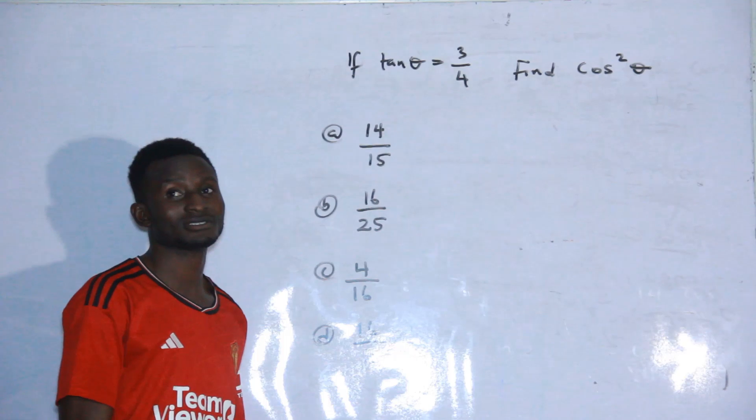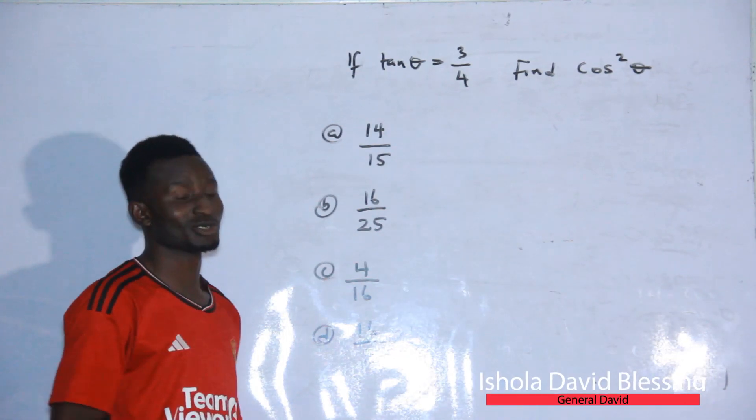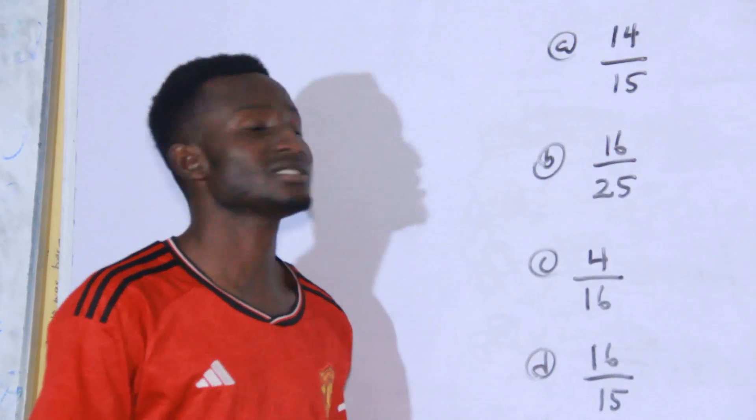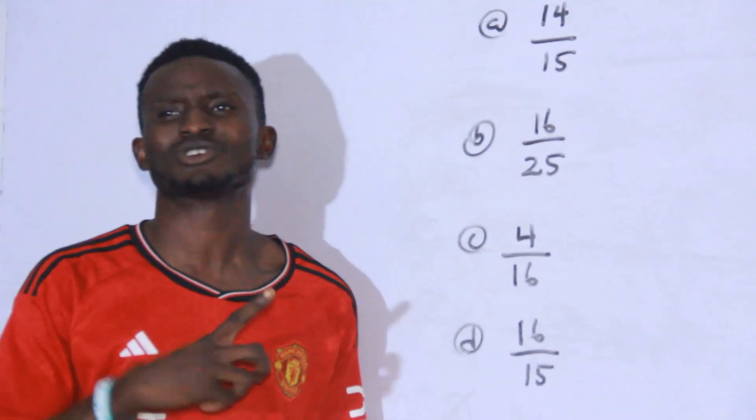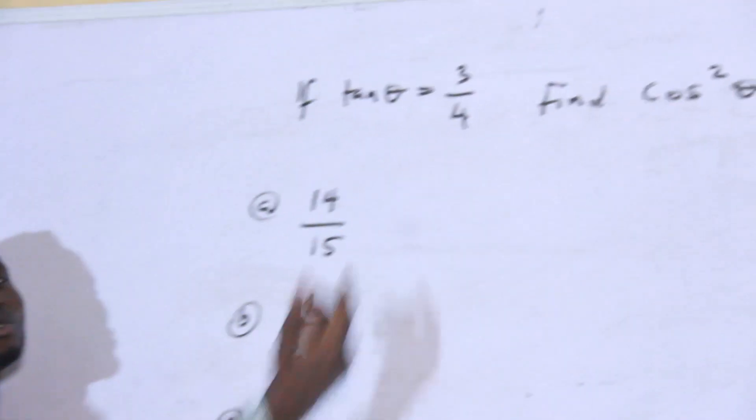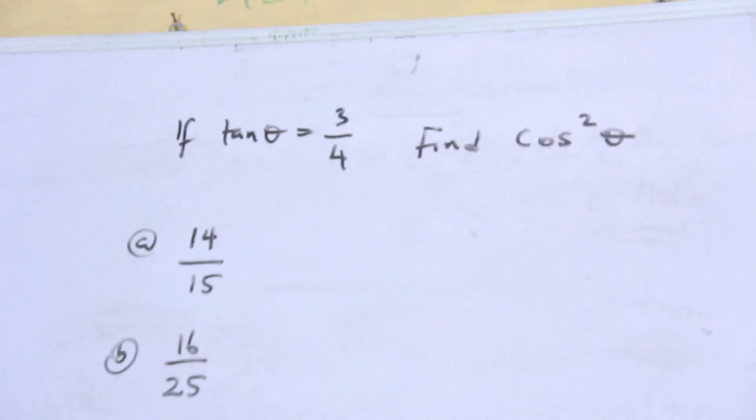Welcome to another question for the pure and applied calculator and shortcodes. In this aspect we'll be dealing with other structures of the question under trigonometry. Now see this question: if tan theta equals 3 over 4, find cos squared theta.